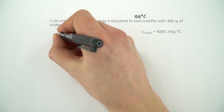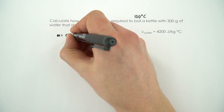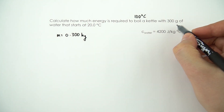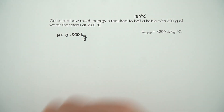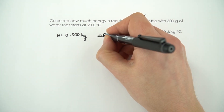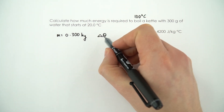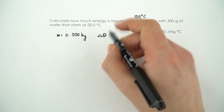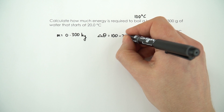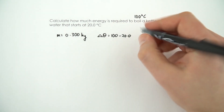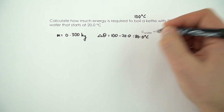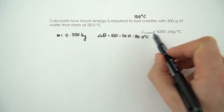So what do we know? The mass is equal to 0.300 kilograms, converted from grams. The change in temperature — we use delta theta for temperature, as theta is a bit like the Greek letter T — so delta theta is equal to 100 (final temperature) minus 20.0 (initial temperature), which gives 80.0 degrees celsius. And we have our specific heat capacity of water.